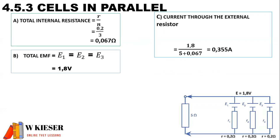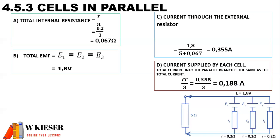To calculate the current throughout the external resistor, it is the total EMF divided by the total resistance. The total resistance is the sum of the external resistor and the total internal resistance. The current throughout the circuit is 0.355 amps. To determine the current supplied by each cell — since each cell is identical, the current through each branch is exactly the same. Therefore, the total current of 0.355 amps is divided by the number of cells, which is 3, giving a current of 0.118 amps flowing through each cell.